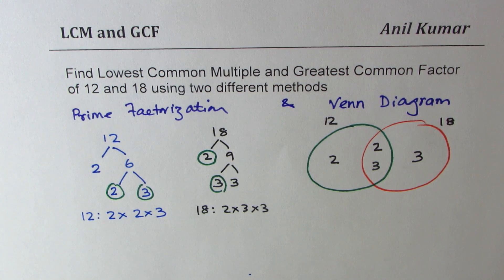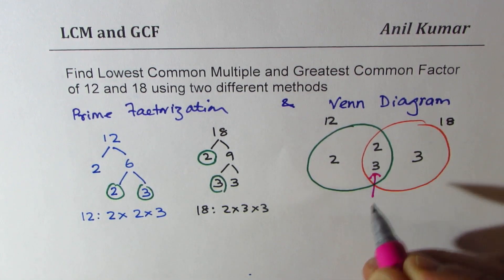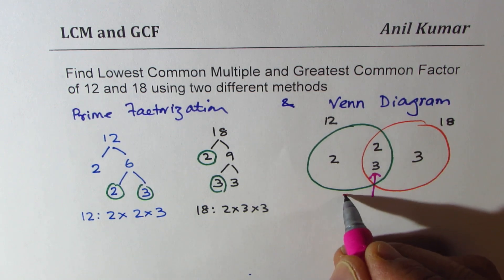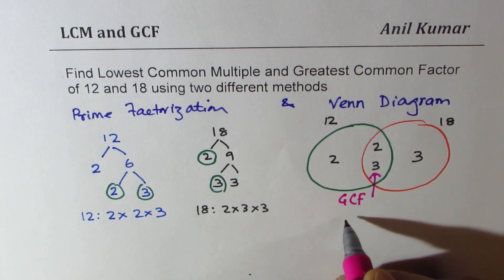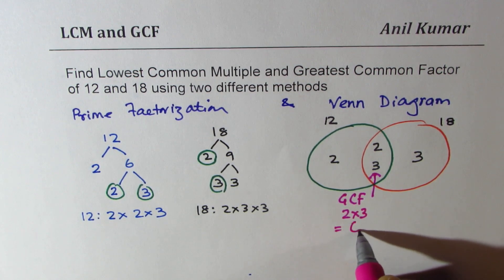This gives you both the answers. What is common? The greatest common factor is the product of these two. So GCF equals 2 times 3, which equals 6. Do you see that?